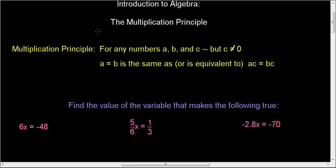The multiplication principle says effectively the same thing, but there's this one restriction. And many math things come with restrictions. And it says, if you have any numbers a, b, and c, but c cannot be zero. Let me finish this, and I'll tell you why.